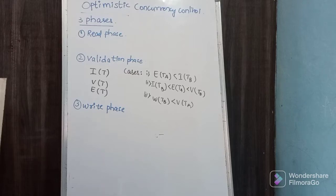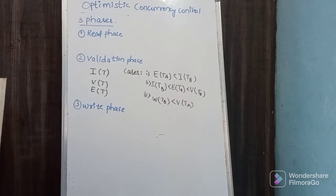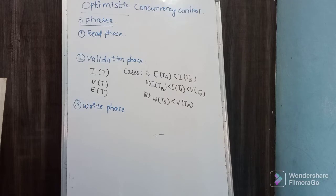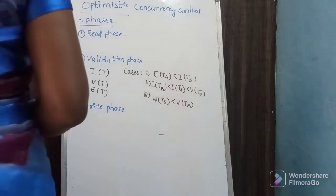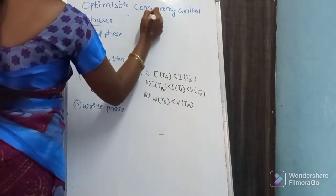In this session, we are going to discuss another locking protocol: optimistic concurrency control. In the last class, we discussed strict 2PL, 2PL, and timestamp-based protocols — all those are locking protocols. To achieve concurrency control, we may use a locking technique or we may use a without-locking technique. Optimistic concurrency control is a technique without using any locks.